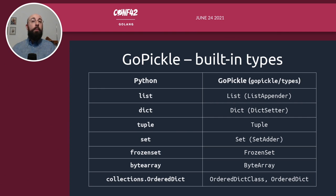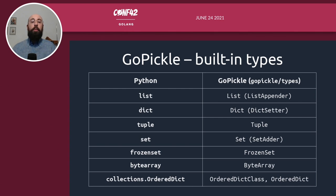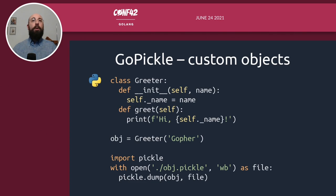The types sub-package provides a limited amount of structs and interfaces to represent and handle a limited set of Python structures and data types, which are particularly useful for the implementation of the unpickling machine — representing lists, dicts, tuples, and so on. Please keep in mind that the implementation of some of these types is not particularly optimized. The main goal was to quickly have a working implementation of the whole unpickling machine, and there's plenty of room for further improvements.